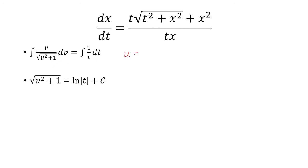So you have to use u is v squared plus 1. du is 2vdv. And then it's just 1⁄2 du over square root of u, which is just u to the negative 1⁄2.